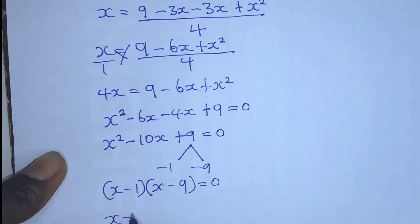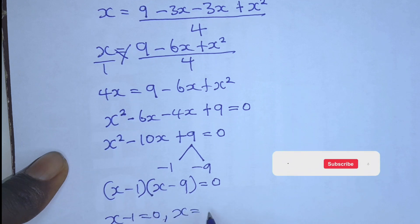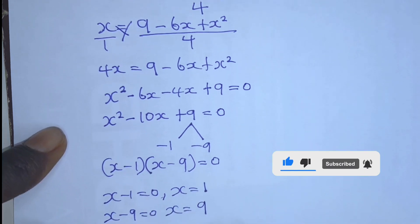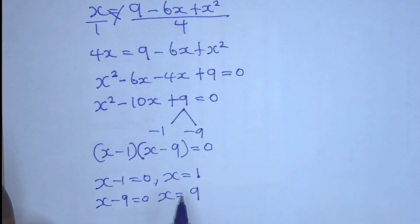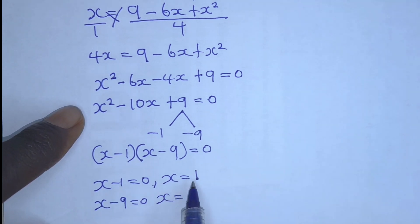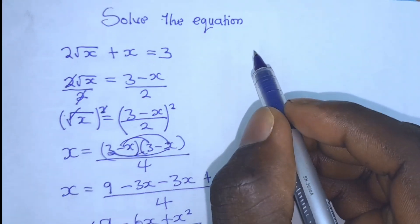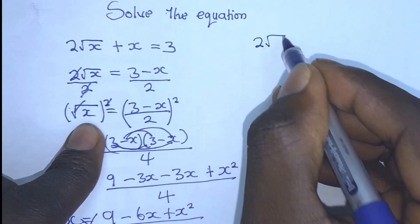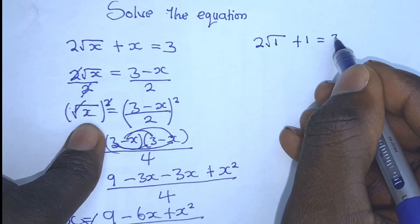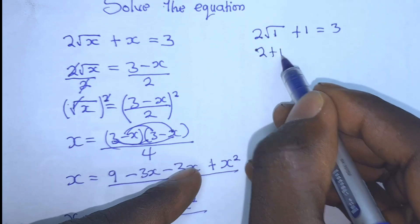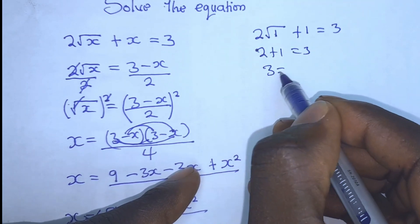Therefore, x minus 1 equals 0 and x minus 9 equals 0, giving x equals positive 1 or x equals positive 9. We can plug back the value of x to check whether the equation is satisfied. Let's pick x equals 1: 2 root x plus x equals 3 becomes 2 times 1 plus 1 equals 3, and since square root of 1 is 1, we get 2 plus 1 equals 3, so 3 equals 3. ✓